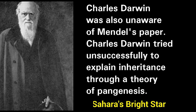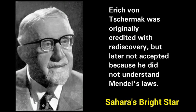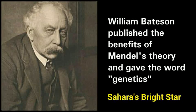Charles Darwin was unaware of Mendel's paper and tried unsuccessfully to explain inheritance through a theory of pangenesis. By 1900, research aimed at finding a successful theory of discontinuous inheritance rather than blending inheritance led to independent duplication of his work by Hugo de Vries and Carl Correns, and the rediscovery of Mendel's writings and laws. Eric von Tschermak was originally credited with rediscovery but later not accepted because he did not understand Mendel's laws. William Bateson published the benefits of Mendel's theory and gave the word genetics.